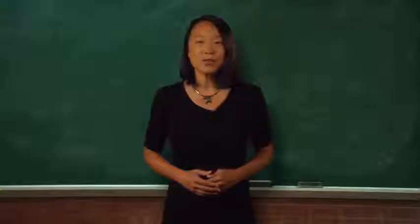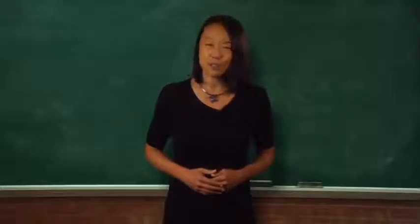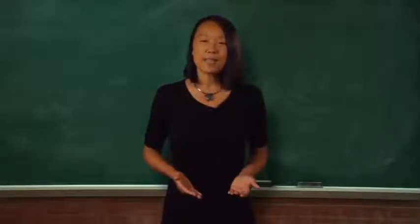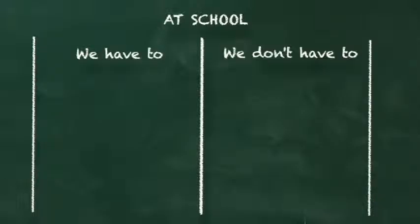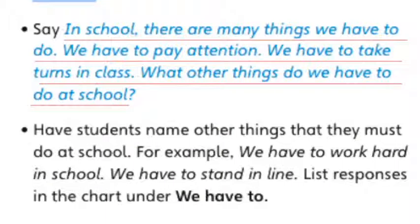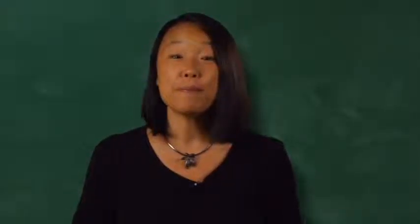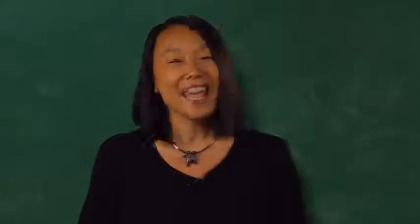The activity for presenting these grammatical structures connects the meaning of the structure to students' real lives. The lesson planner says to draw a two-column chart on the board. Label the chart 'at school,' write 'we have to' over the left-hand column and 'we don't have to' over the right-hand column. The suggested language for the teacher is: 'In school there are many things we have to do. We have to pay attention. We have to take turns in class. What other things do we have to do at school?' And then it continues with examples of things students don't have to do at school. Our World provides teachers with both activities and language for presenting new content to young learners.